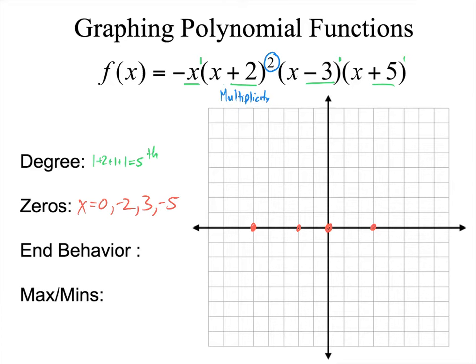Instead of going through at negative 2, it's going to be a bounce effect. It bounces off the x-axis instead of going through. Every time before we went straight through the zero, but when you have a multiplicity of 2, it's going to have a bouncing effect.